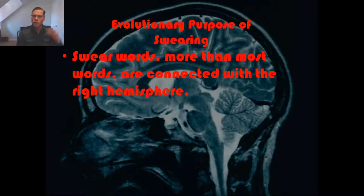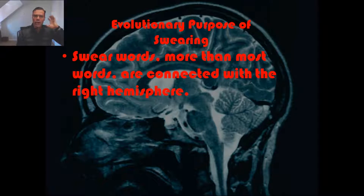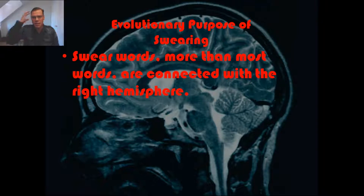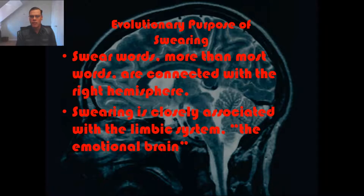Most people, even when they have global aphasia where all of that left hemisphere language ability has been destroyed, are still able to swear. This suggests that something must be going on in the right hemisphere as well. Another thing we have to understand is that swearing is closely associated with the limbic system — the emotional brain.